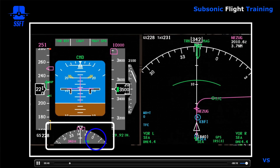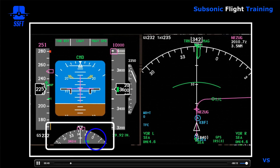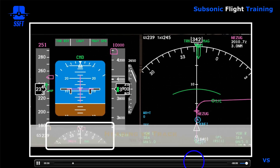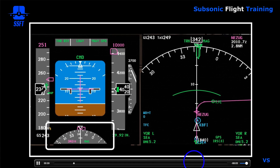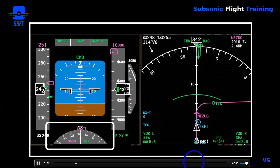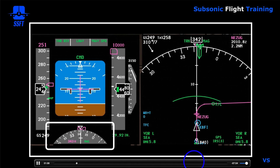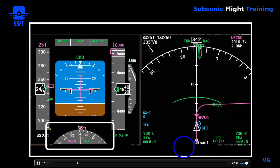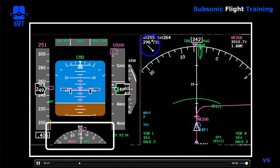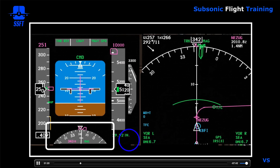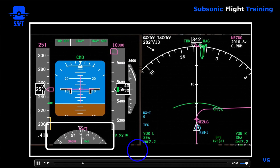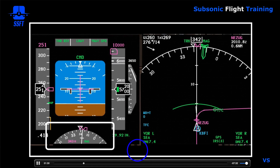If we had a direct headwind or a direct tailwind, heading and track would be identical — the way we are heading is the same as our actual path over the ground. Now you can see a little bit of wind coming into play as the wind vector appears above five knots. It is a crosswind from left to right, and now there's a little bit of difference between the heading and the track, because the way the airplane is pointing is different than the actual path over the ground.